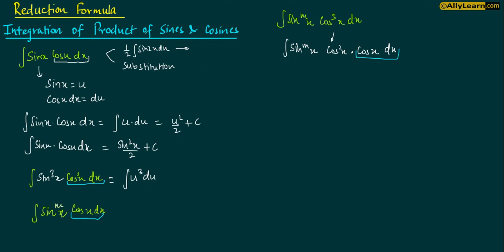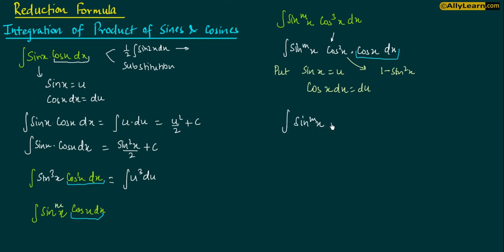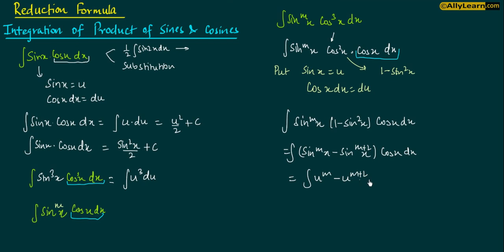Now I can apply sin x equal to u. यहाँ पर cos x dx = du होगा. और cos²x को मैं 1 - sin²x put कर सकता हूं. So we will have sin^m x · (1 - sin²x) · cos x dx, which equals sin^m x · cos x dx - sin^(m+2) x · cos x dx. Now applying the substitution, we get u^m - u^(m+2), and you can integrate this.